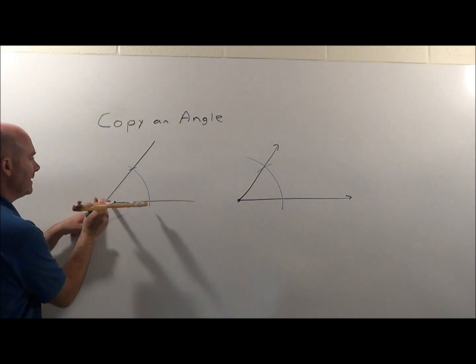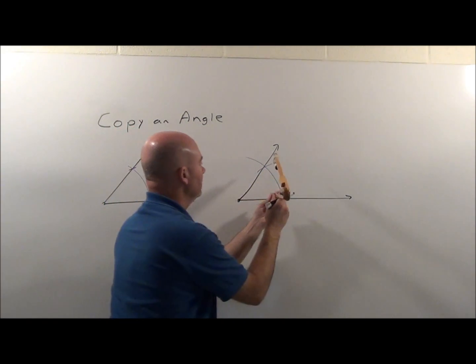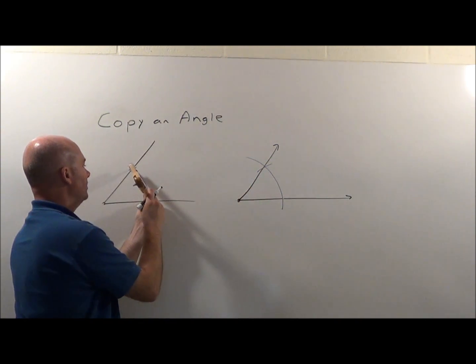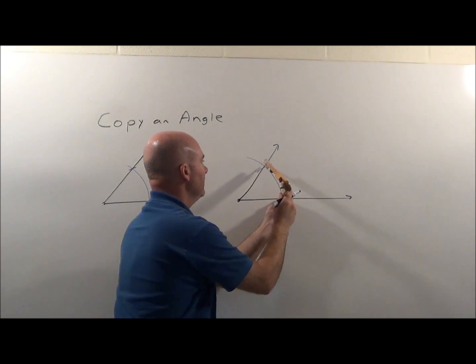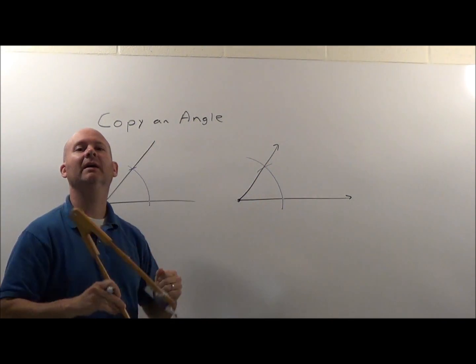So again, you start from the vertex, create an arc, come over here, create the same arc, then you measure and measure the same distance. That's how we copy an angle.